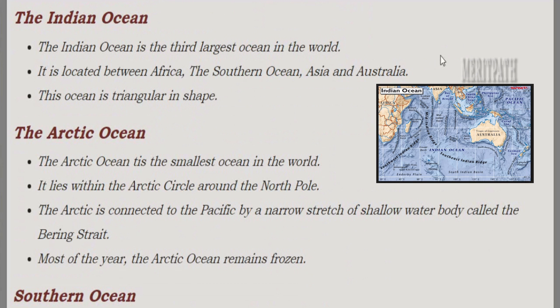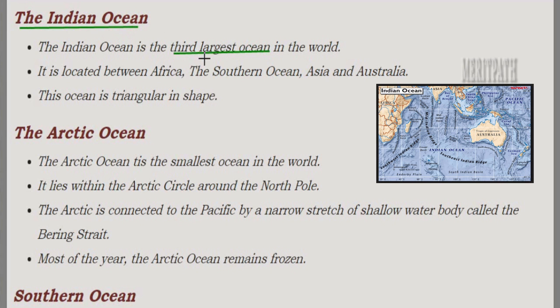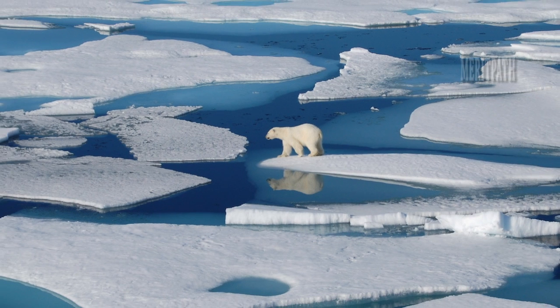The Indian Ocean is the third largest ocean in the world after the Pacific and Atlantic Oceans. It is located between Africa, the Southern Ocean, Asia, and Australia, and is triangular in shape.